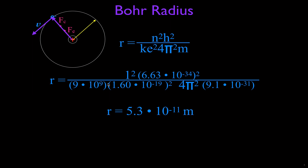If we want to find the radius for N2 (the first excited state), N3, and N4, we notice that everything in the equation stays the same except for N. Coulomb's constant, the elemental charge, the mass of the electron, Planck's constant — all of that stays the same and will always equal 5.3 times 10 to the minus 11. So we can write a more general form: R equals N squared times 5.3 times 10 to the minus 11, to find the radii for the ground state and all excited states.